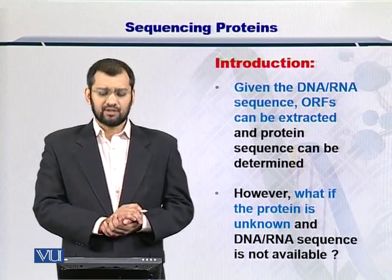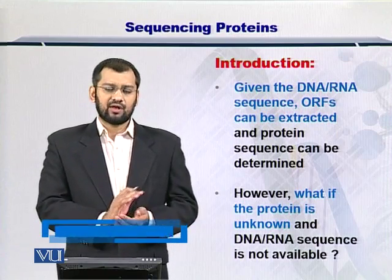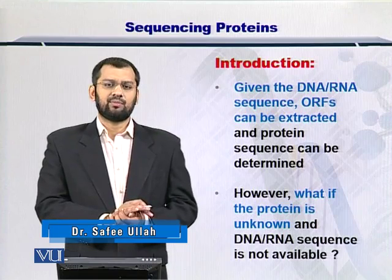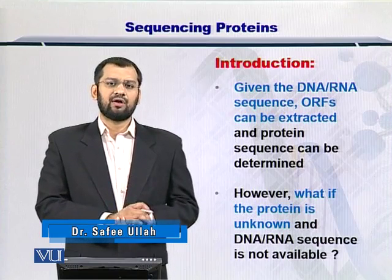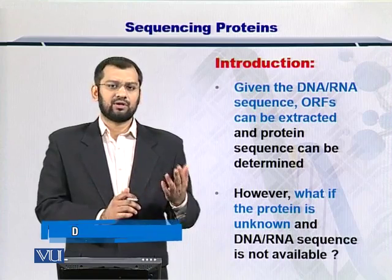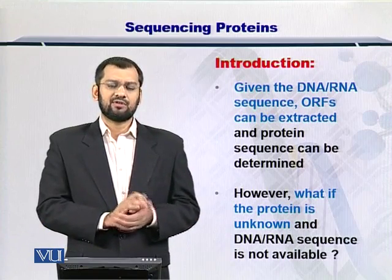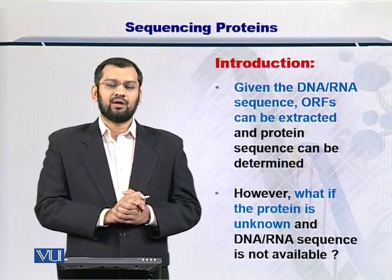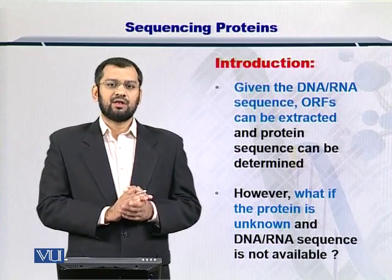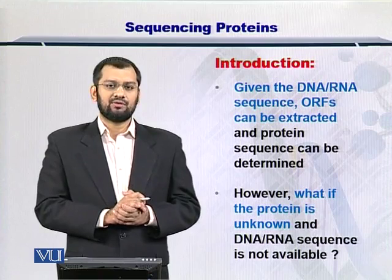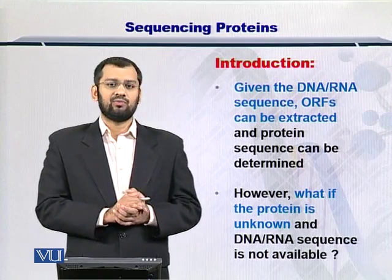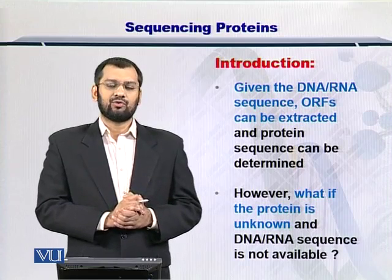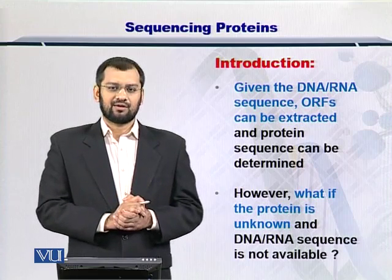As I just mentioned, given the DNA and the RNA sequence, it is very simple to actually find out the protein sequence. You just go and find the longest ORF, convert it into the amino acids by looking at the lookup table, and you are done. But in a situation where there are unknown proteins involved and you don't know which part of the genome or the RNA is actually coding for those proteins, then you are stuck.